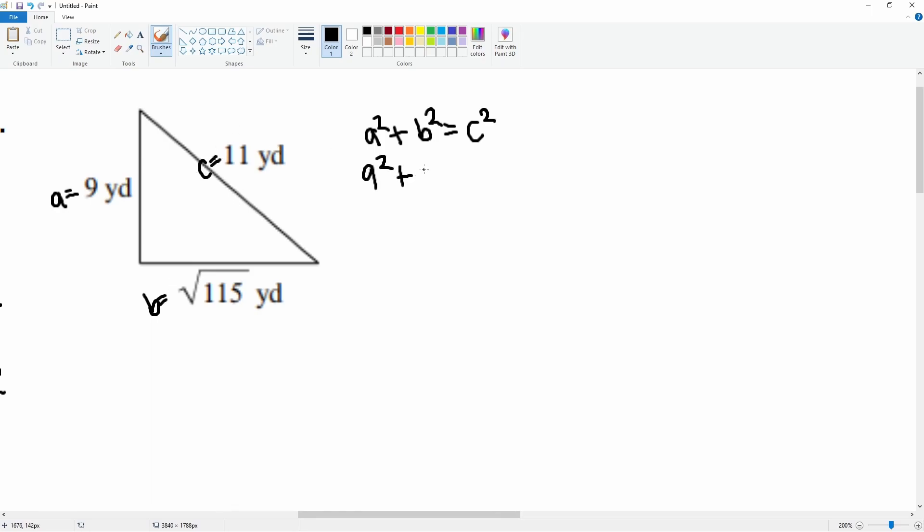9 squared plus parentheses square root 115 squared equals 11 squared. This is 81 plus 115, and this is 11 squared which is 121. 81 plus 115 is 196, and that is not equal to 121, so this is not a right triangle.